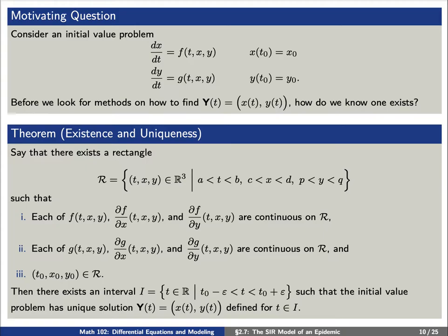This is the content of the existence and uniqueness theorem. Say that there exists a rectangle which consists of (t,x,y) where t is between a and b, x is between c and d, and y is between p and q, satisfying the following properties. First, each of f, the partial of f with respect to x, and the partial of f with respect to y are continuous in this rectangle.